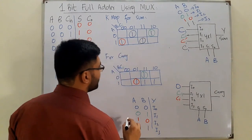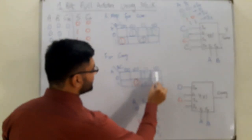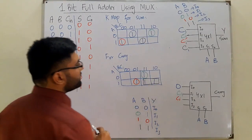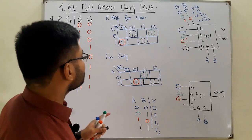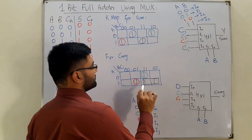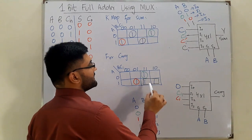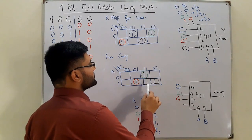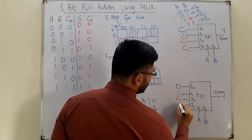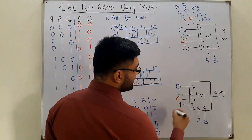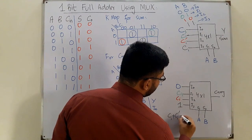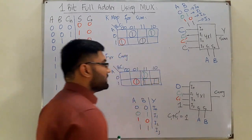For the final case, A=1 and B=1 (I3): we have two ones in those two blocks. We can group them together, giving C OR C complement, which equals 1. So I3 = 1.